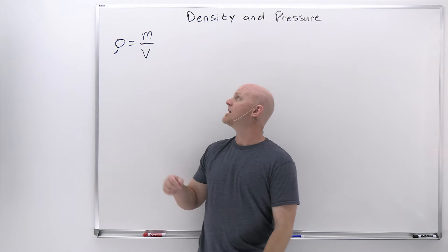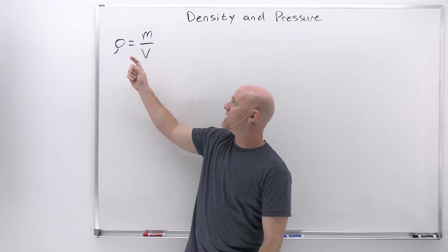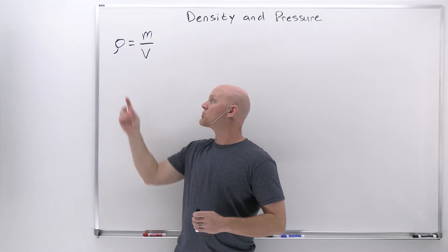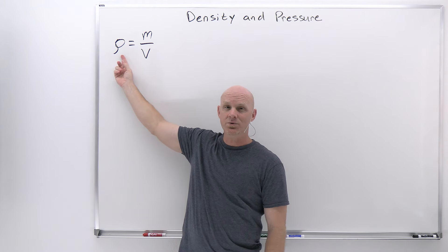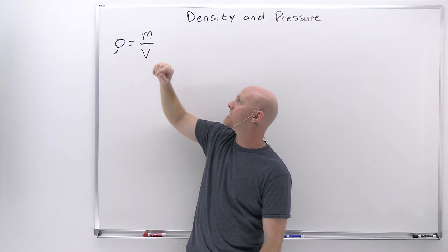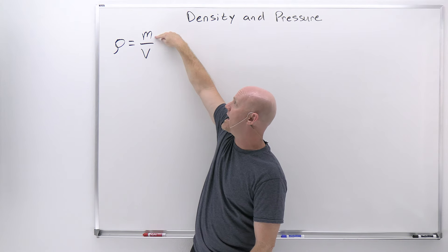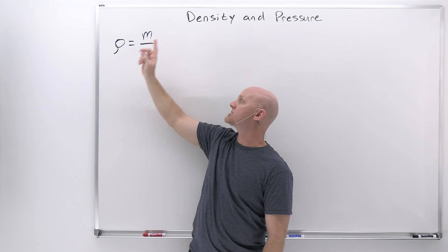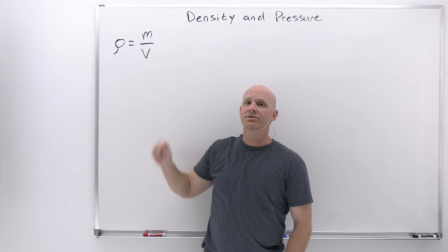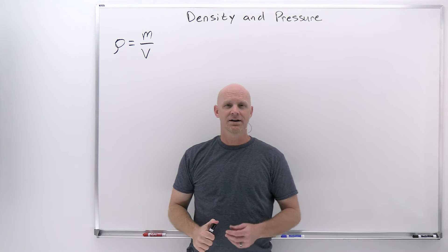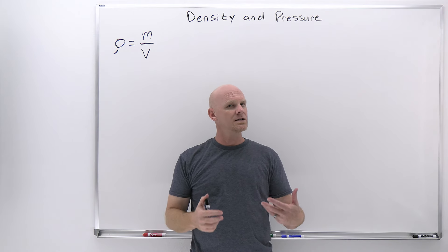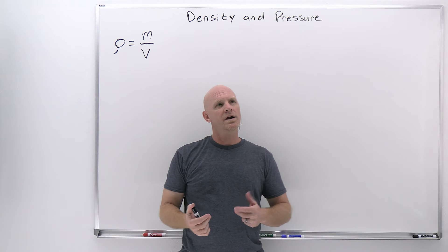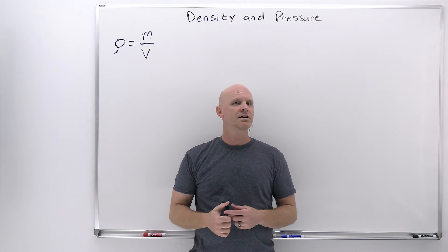We'll start with the topic of density. Density is symbolized by the Greek letter rho — this looks like a funky P, but it's the Greek letter rho — and it's equal to the ratio of mass over volume. Density is proportional to mass but inversely proportional to volume. It's something most of us have an intuitive understanding of, but don't always enunciate correctly.